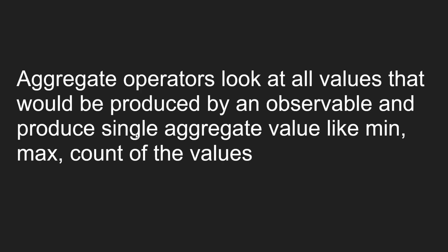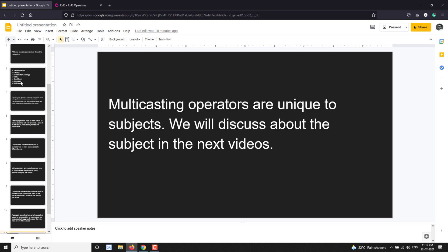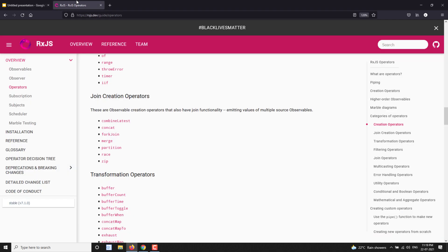Aggregate operators collect all the values produced by an observable until it completes, and then produce a single aggregate value — something like finding the minimum, maximum, total count, and so on. Multicasting operators are unique to subjects. We will discuss the subject concept in the next coming videos, and then we can understand multicasting. So these are the different categories of operators.